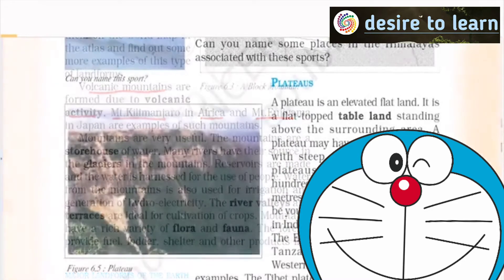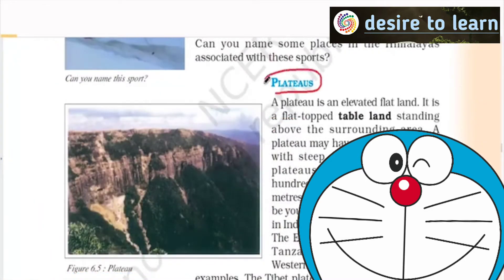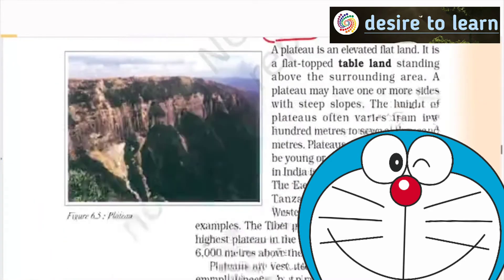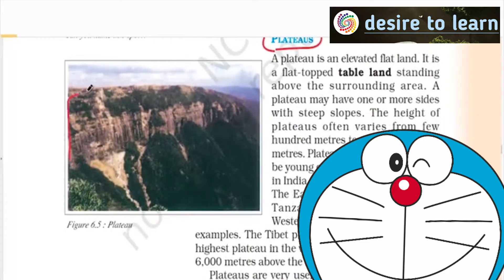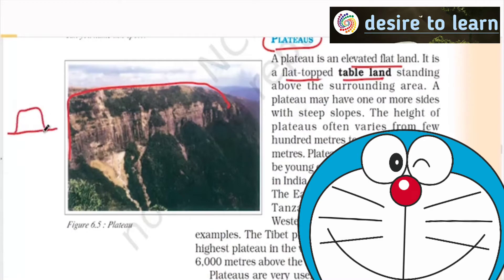We need to talk about the plateaus. Can you see this particular region which is above? A plateau is an elevated flat land. It has a flat top, similar to table land. If you have normal land like this, the plateau looks like this. This is mainly because, if you have two mountains, when they were compressed, the land which is there in between was raised.